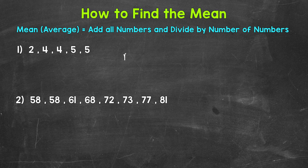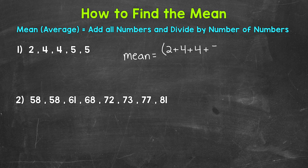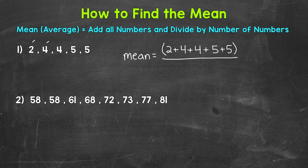We'll start with mean equals, and then let's add all of our numbers, so 2 plus 4 plus 4 plus 5 plus 5. And then we're going to divide by the number of numbers, so 1, 2, 3, 4, 5 numbers. So we divide by 5.